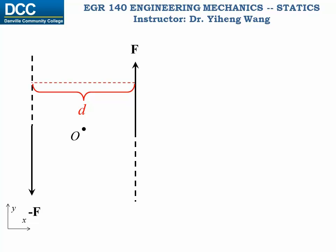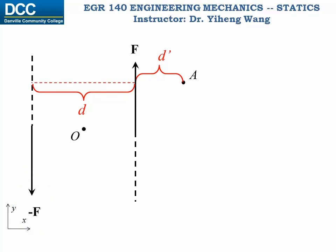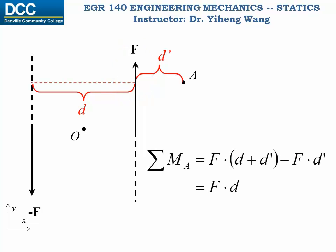In fact, we can also calculate the total moment caused by these two same forces about another arbitrary point, point A, that is at a distance d prime from force F, as shown. This force creates a counterclockwise rotational effect about point A with a moment arm of d plus d prime, while this force creates a clockwise rotational effect about point A with a moment arm of d prime. Therefore, the total moment equals F times (d plus d prime) minus F times d prime, which is still F times d — the same as the moment calculated about point O.